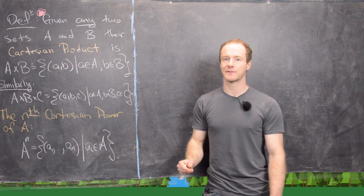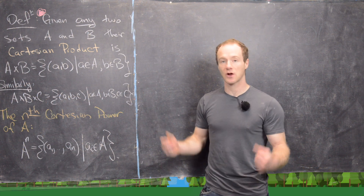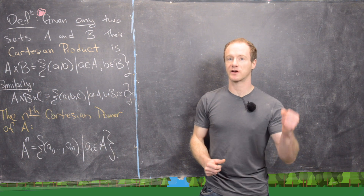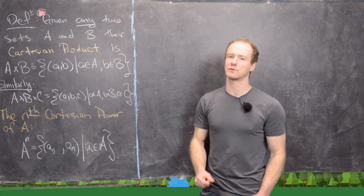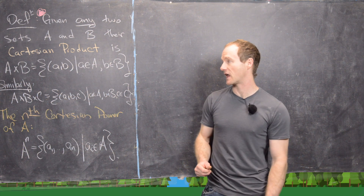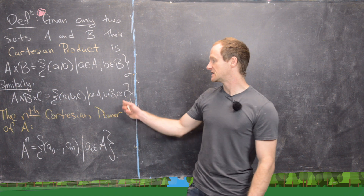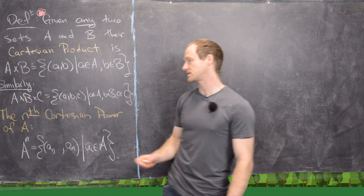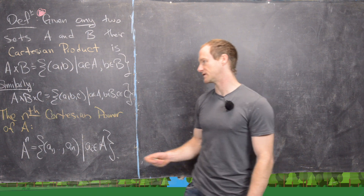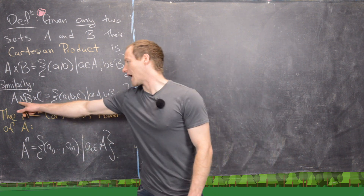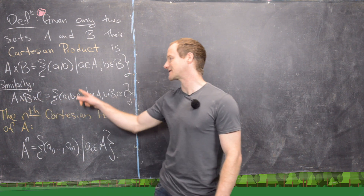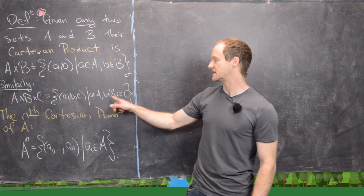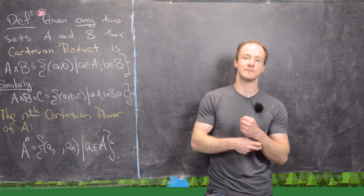You've seen something like this before — the Cartesian coordinate plane is just the product of the real numbers with itself. Similarly, we can define the Cartesian product of three sets: A cross B cross C, which gives all ordered triples (a, b, c) where a is in A, b is in B, and c is in C.